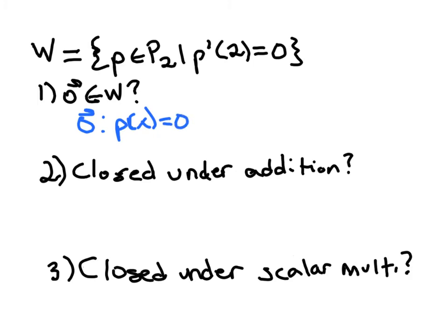And so if we check the main criteria here is, is the derivative at 2 equal to 0? Well yes, because the derivative of this, any constant function actually, the derivative is always 0, no matter what the input is there for x. So sure, P prime at 2 would be 0. It meets that condition, and so the 0 vector is in W.